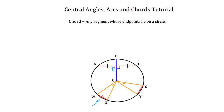Now because those two chords are congruent, the central angles that they come from — so in this case angle WCX and angle ZCY — are both going to be congruent to each other to have created those two congruent chords. And because those two central angles are congruent to each other, the arcs that are created by those central angles must also be congruent to each other.